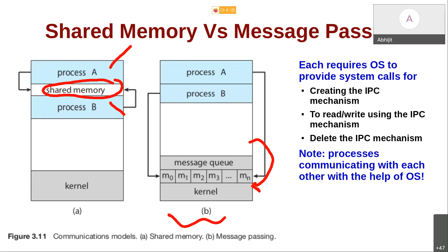We have a case where processes communicate with each other with the help of the OS, and there is no other way they can do it. If you want a multi-tasking system where processes are segregated into their own address spaces and should not touch each other's data and code, they can communicate only with the help of the regulator — the kernel.